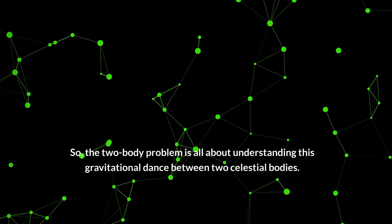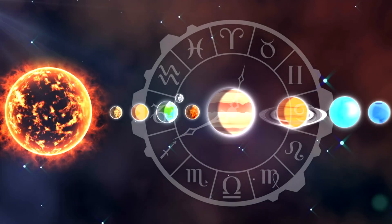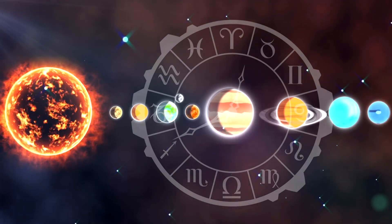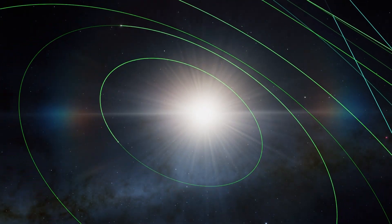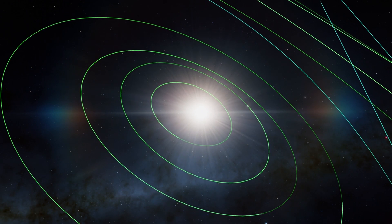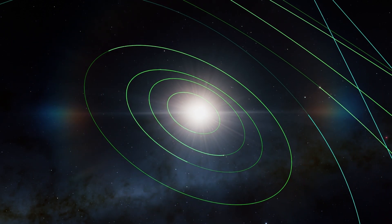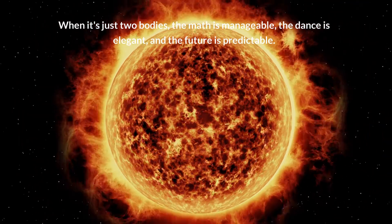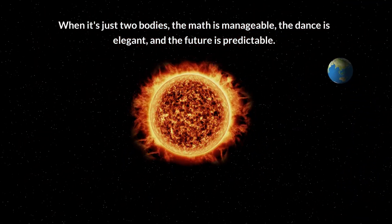So the two-body problem is all about understanding this gravitational dance between two celestial bodies. It's about predicting their future positions based on their current positions and velocities. And thanks to the regularity and predictability of the two-body problem, we're able to send spacecrafts on precise interplanetary journeys and predict solar and lunar eclipses years in advance. When it's just two bodies, the math is manageable, the dance is elegant, and the future is predictable.